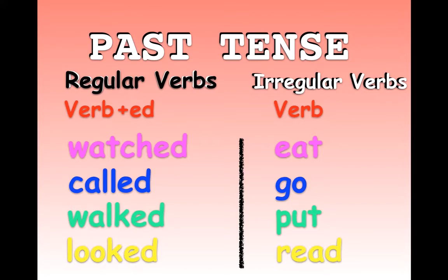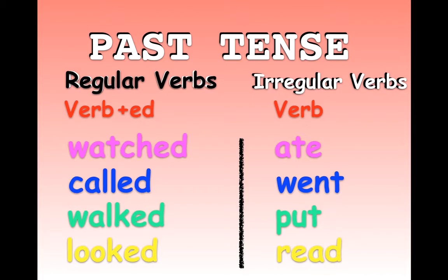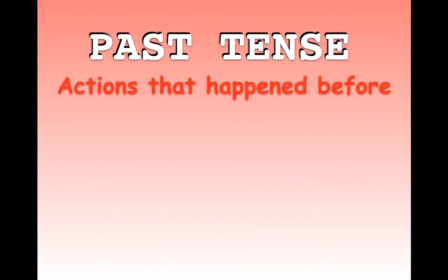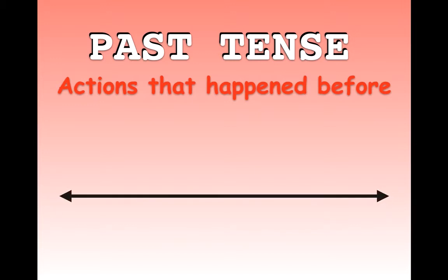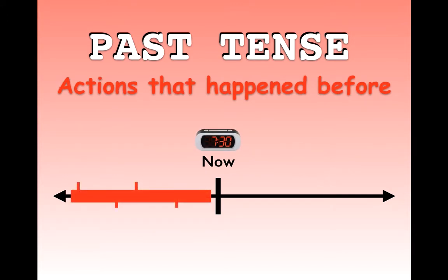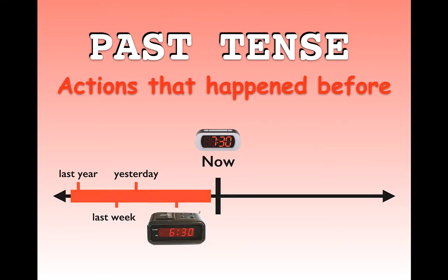If you need to find irregular verbs, there is an irregular verb list posted in Google Classroom that you can look at. Now, to understand the past tense — remember that past tense describes actions that happened before now, in the past. So if it's now 7:30, a past tense action would be sometime before now — it could be at 6:30, yesterday, last week, or last year.